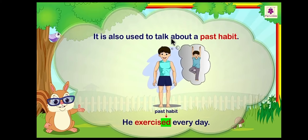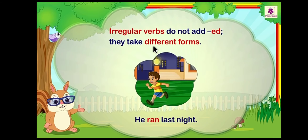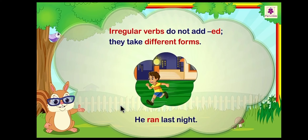The simple past tense is also used to talk about a past habit — whenever we are talking about past habits that we are not doing right now, we always use past tense. 'He exercised every day but now he is not doing that.' Irregular verbs do not add ED; they take different forms. 'He ran last night' — run is an irregular verb, so its past form is 'ran', not 'runned'.